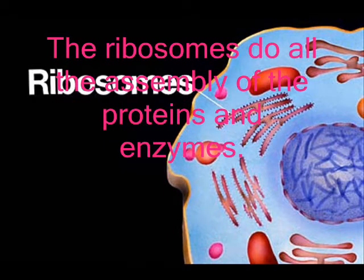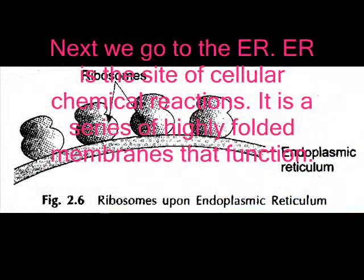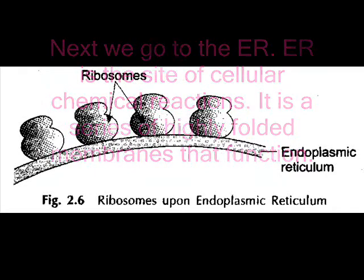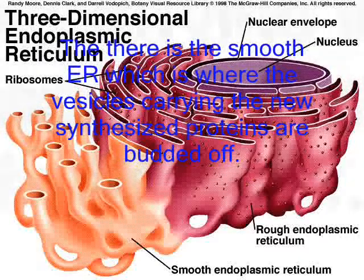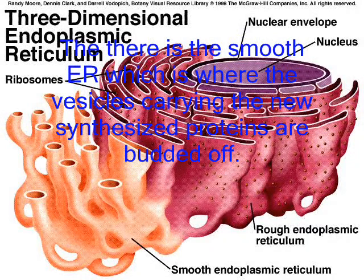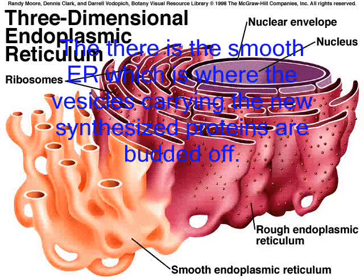The ribosomes do all the assembly of the proteins and enzymes. Next, we go to the ER. The endoplasmic reticulum is the site of cellular chemical reactions; it is a series of highly folded membranes. There are two types of ER: smooth and rough. Rough ER is covered in ribosomes and is a site of protein synthesis. Smooth ER is where the vesicles carrying the newly synthesized proteins are budded off.